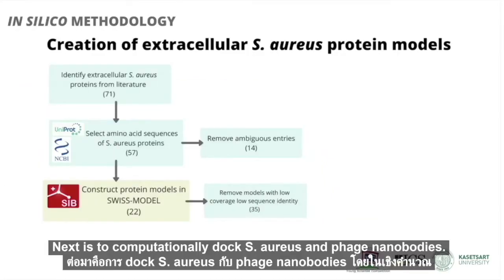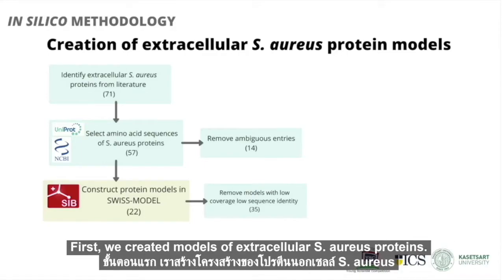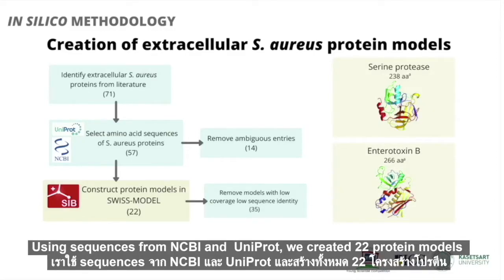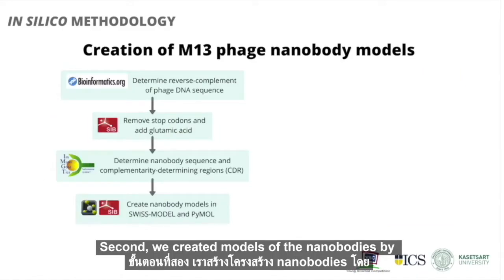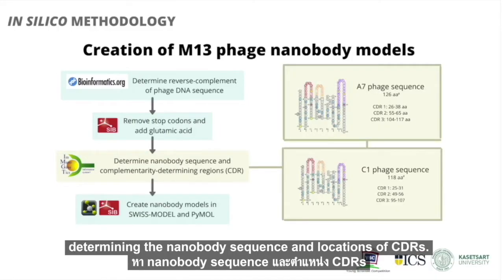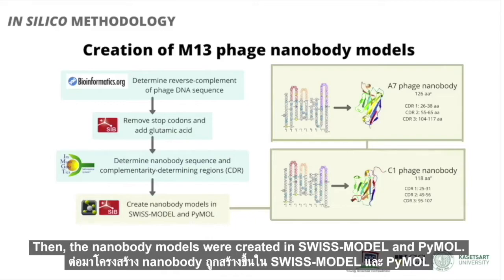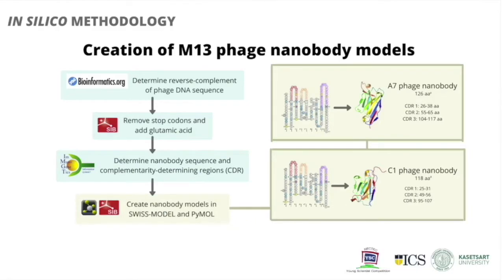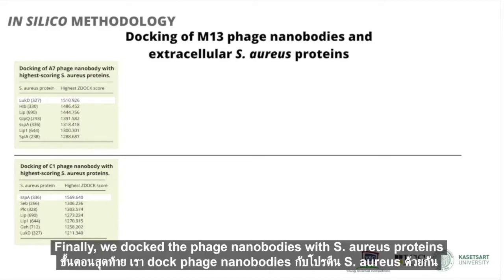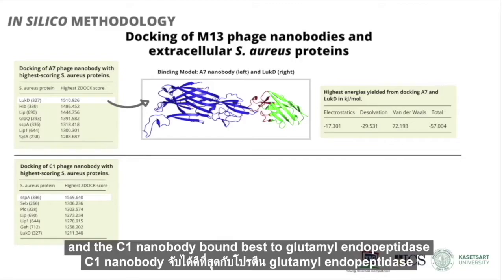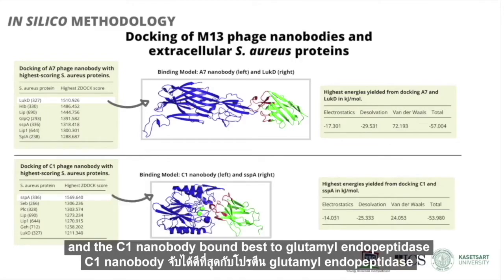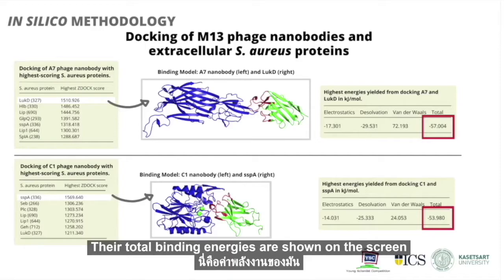Next is to computationally dock S. aureus and phage nanobodies. First, we created models of extracellular S. aureus proteins. Using sequences from NCBI and UniProt, we created 22 protein models in SWISS-MODEL — two of them are shown on the screen. Second, we created models of the nanobodies by determining the nanobody sequence and locations of CDRs. Then the nanobody models were created in SWISS-MODEL and PyMOL. Finally, we docked the phage nanobodies with S. aureus proteins. The A7 nanobody bound best to the S. aureus protein leukotoxin D, and the C1 nanobody bound best to glutamyl endopeptidase. Their total binding energies are shown on the screen.